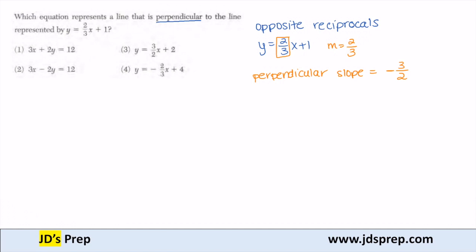So automatically, I can eliminate 4 because the slope there is negative 2 over 3. I can eliminate 3 because the slope there is a positive 3 over 2. And we need them to be opposites. So they have to have the opposite sign.